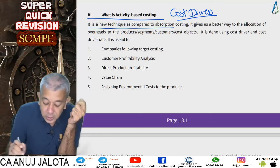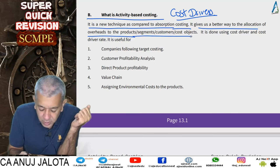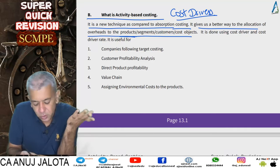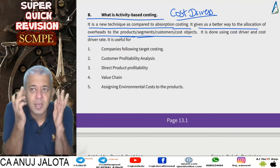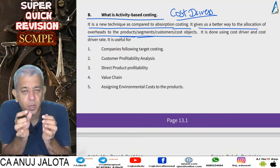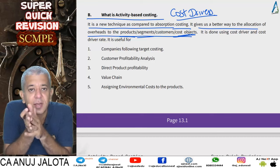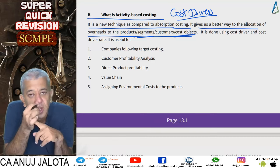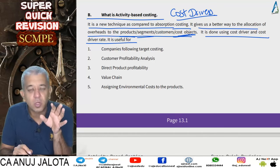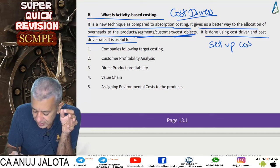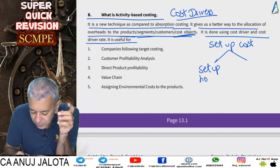Activity Based Costing is a new technique compared to absorption costing. It gives a better way of allocating overheads to products, segments, customers, or cost objects. Segments could mean north India, south India, and so on. Under ABC, the limit is only your imagination — we can find out the cost of a product, a segment, or a particular type of customer. All those to whom we assign cost are called cost objects.